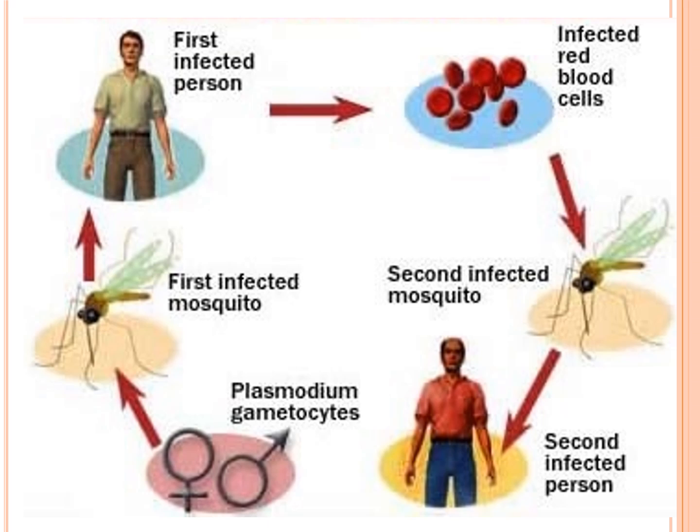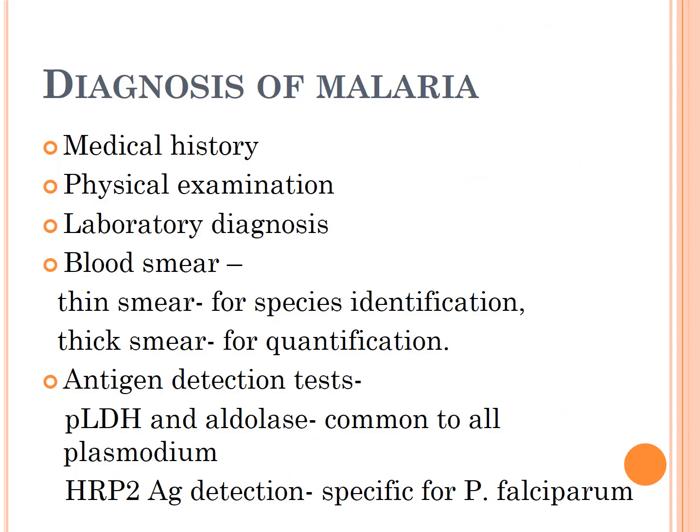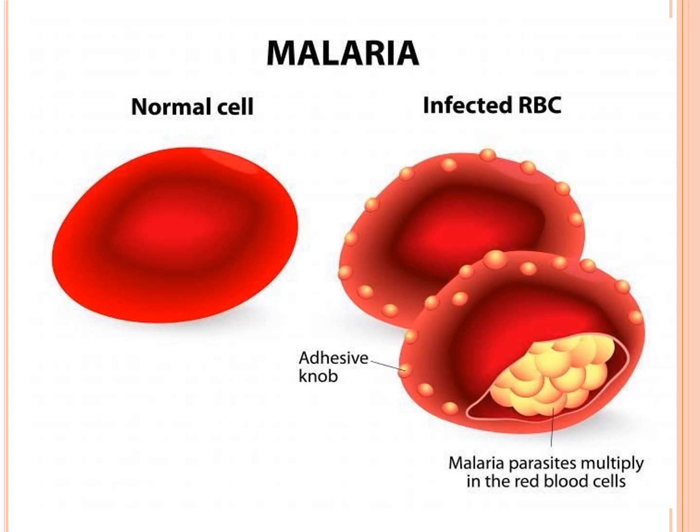This describes the host-to-vector transmission of the disease, where the mosquito transmits the illness to the human host. Diagnosis of malaria involves medical history, physical examination, and laboratory diagnosis including blood smear — specifically thin smear for species identification and HRP2 antigen detection, which is specific for P. falciparum malaria.